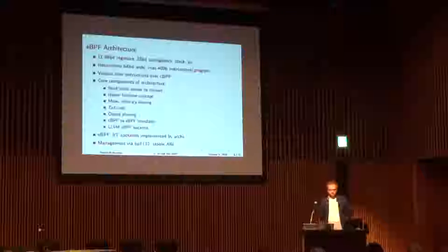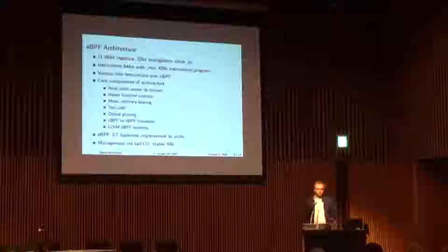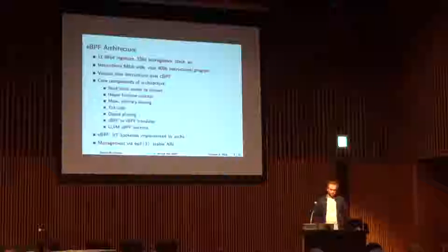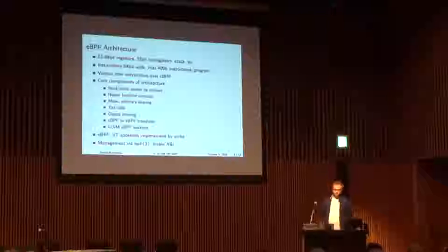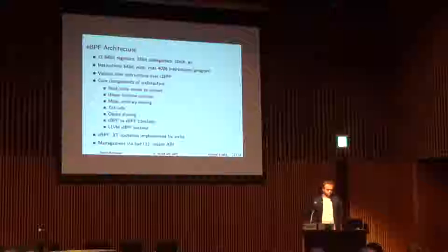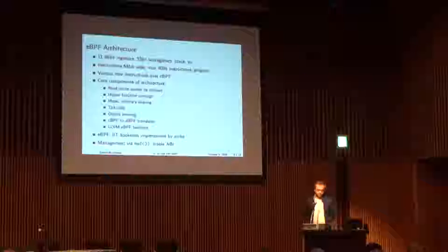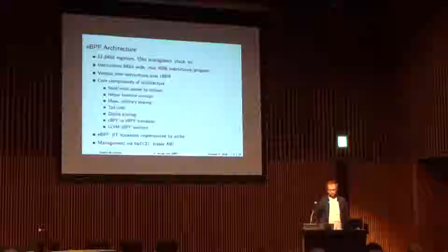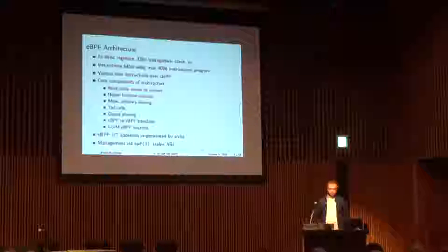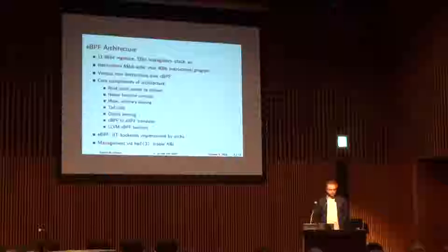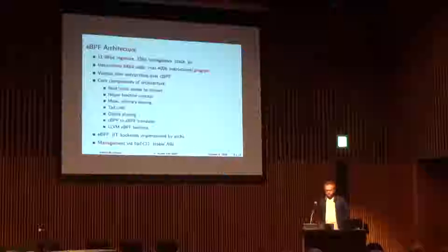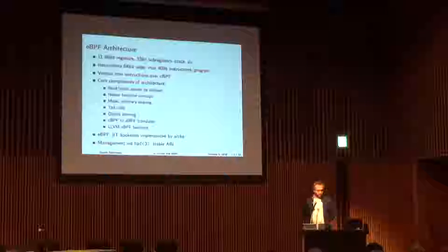The eBPF architecture consists of 11 64-bit registers — some general purpose, some with special purpose such as the frame pointer, argument registers, and a return code register. It also has 32-bit sub-registers, a limited stack space, and an implicit program counter. Instructions are 64-bit wide, and you can have a maximum of 5,069 instructions per program. New instructions over classic BPF include the call instruction for helper calls, full 64-bit operations, and NDMS conversion.